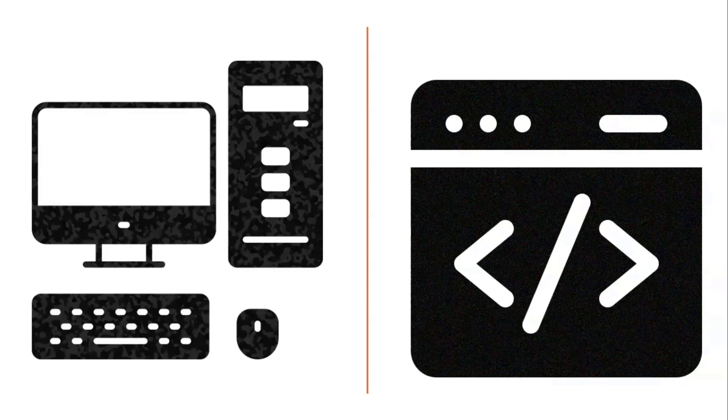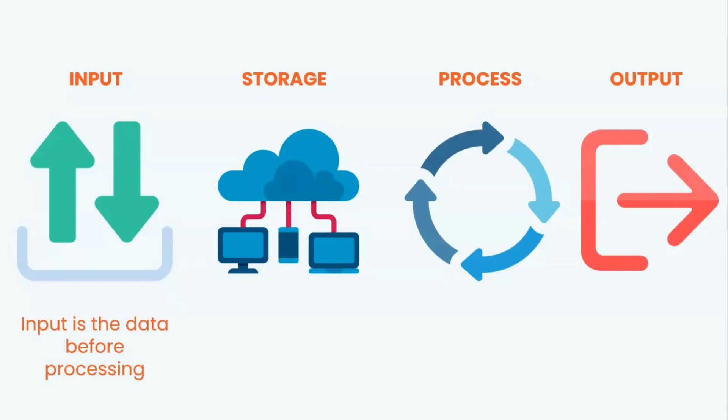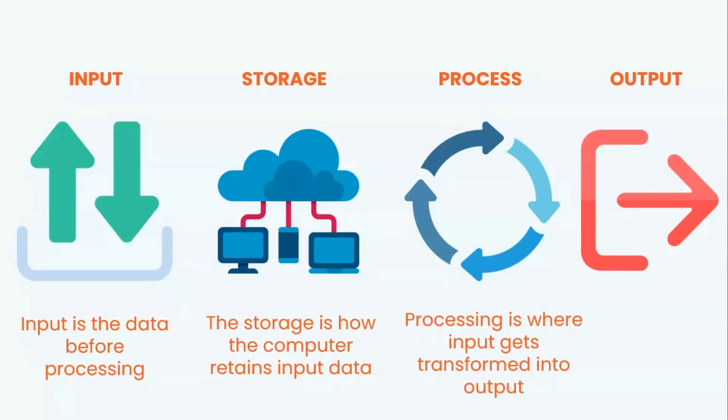A computer processes the input to produce the desired output. But how does a machine outperform the human brain? Conventional computers don't try to mimic the human brain. Instead, they run commands sequentially with data constantly moving from input and memory to the device's processor. Overall, a computer works in four steps. A computer system works by combining input, storage space, processing, and output. These four are the major components of a computer. Data input is the data before processing, storage is how the computer retains input data, processing is where input gets transformed into output, and output is the final result of data processing.